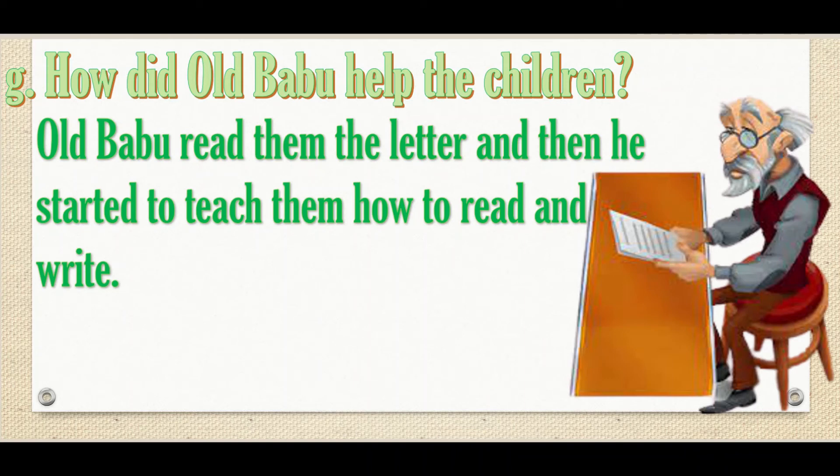Now the question is how would we be able to know that this 'red' is 'read' or this 'red' is 'red'? Well everyone, you can get the idea from the structure of the sentence. Here you can see question: 'How did Old Babu?' The word 'did' is telling that the question is in past tense, so while writing the answer you will use second form of verb to make sure that the answer is also in past tense. So we are going to use R-E-A-D and we are going to pronounce it as 'red.'